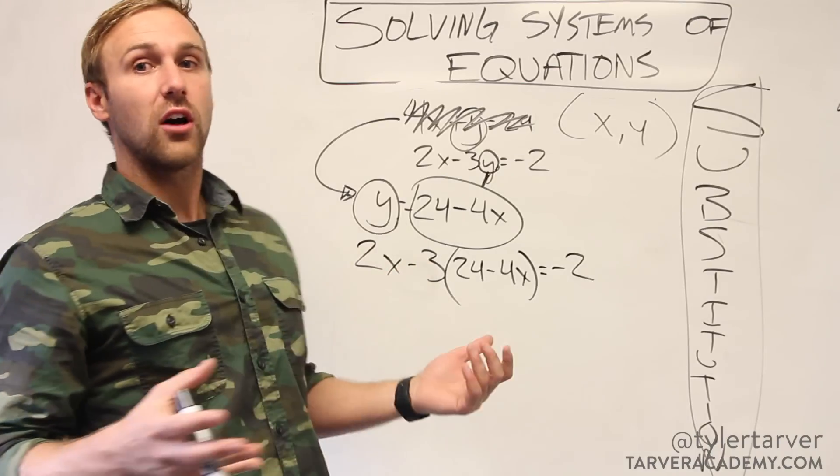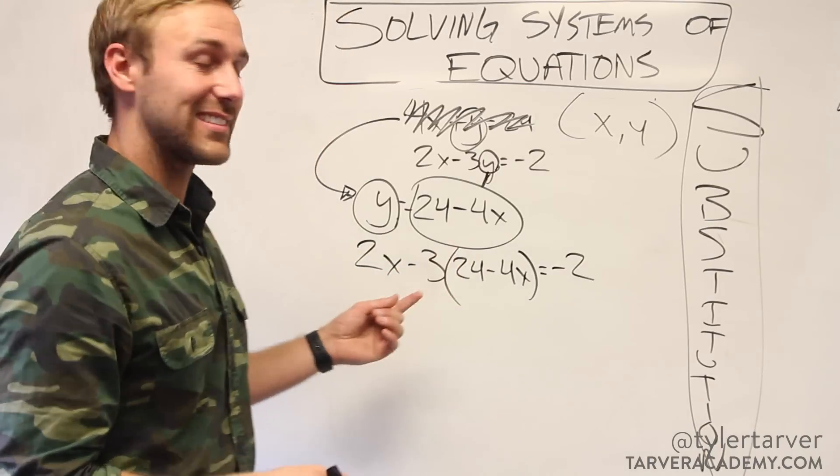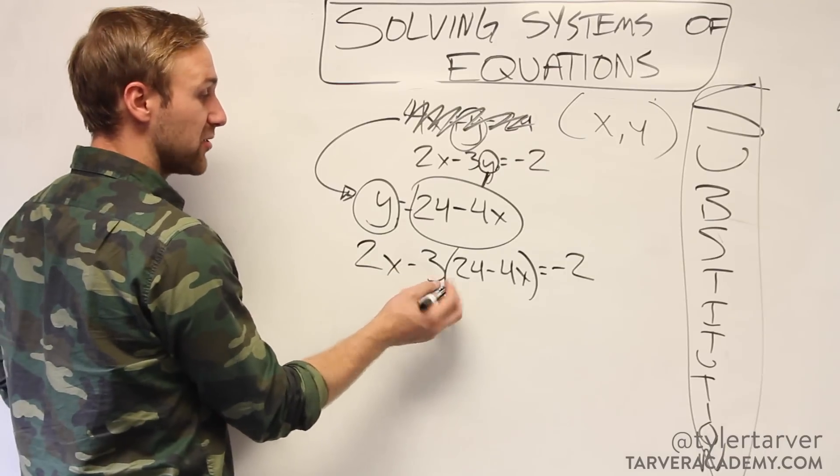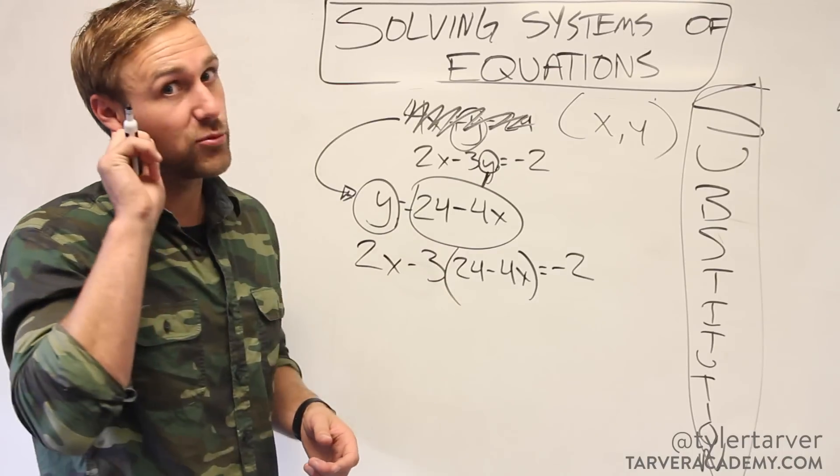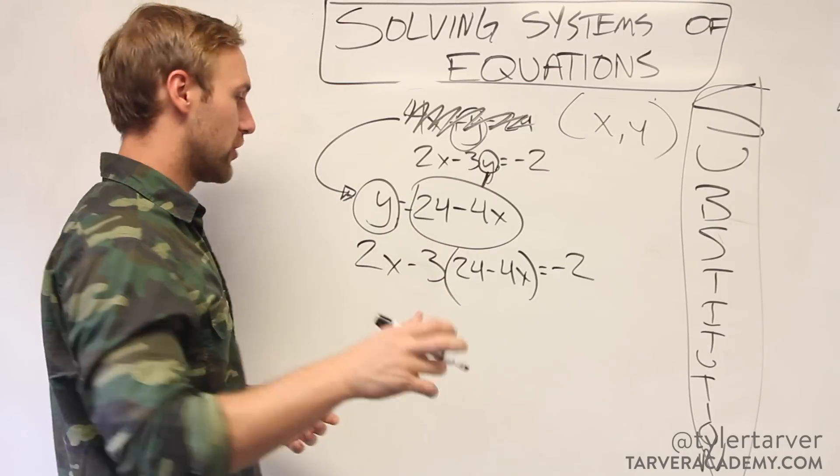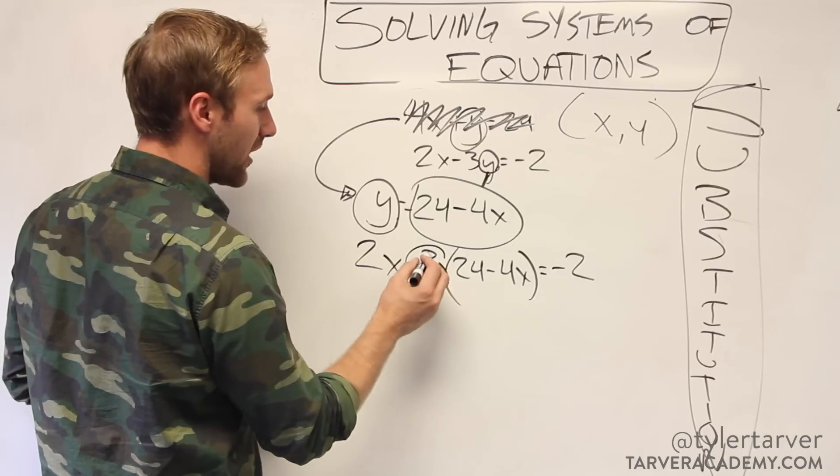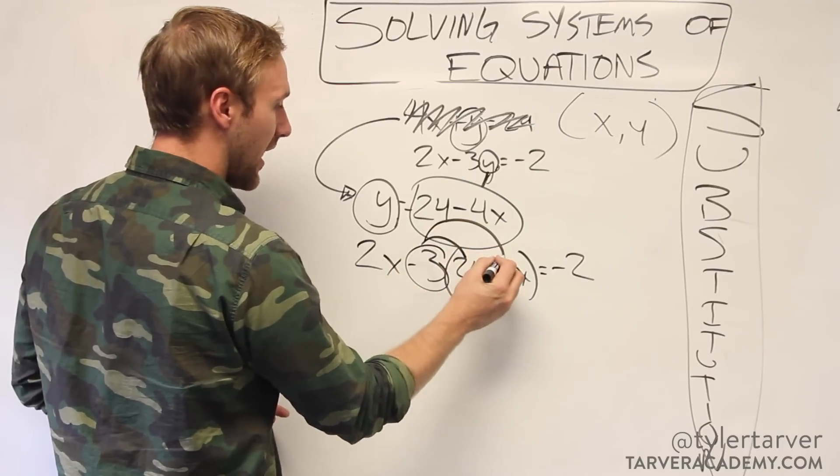Now, I have to just solve this problem for x. I'm going to have to, anytime you see parentheses and there's a number hanging out right next door, you know you have to what? Rhymes with shmishmibute. Distribute. So I'm going to take my negative 3 and I'm going to multiply there and there.